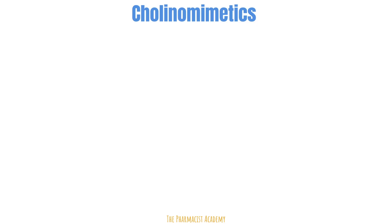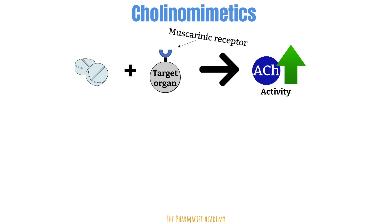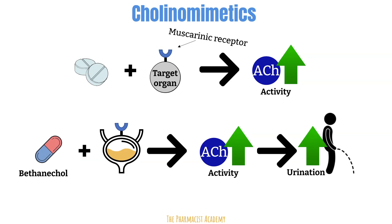Next, cholinomimetics. These drugs bind to the muscarinic receptor on the target organ, leading to an increase in the activity of acetylcholine, which gives us more rest and digest response. An example of a cholinomimetic is bethanechol, which is used for urinary retention because of stimulation of the muscarinic receptors in the bladder.